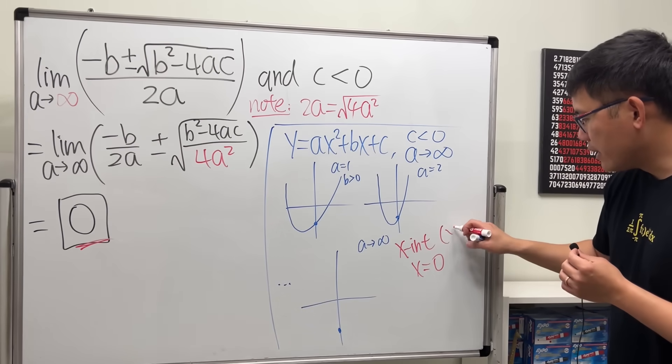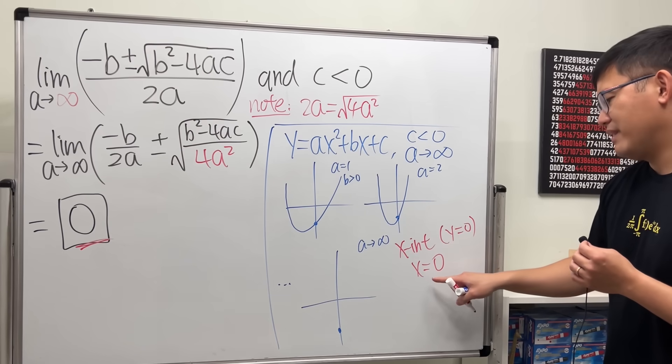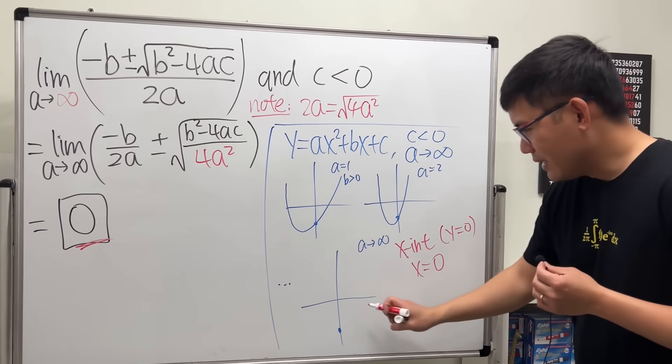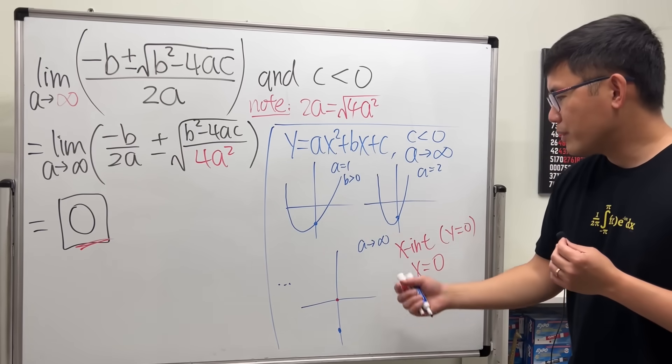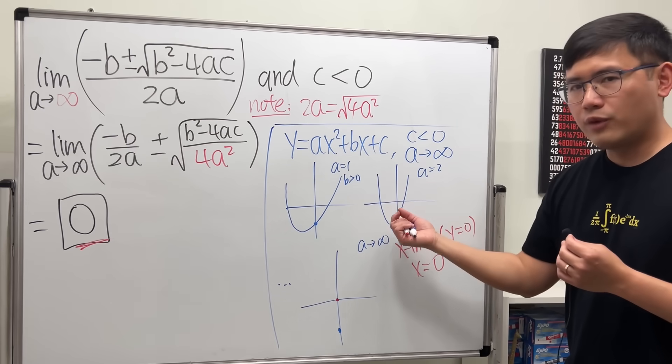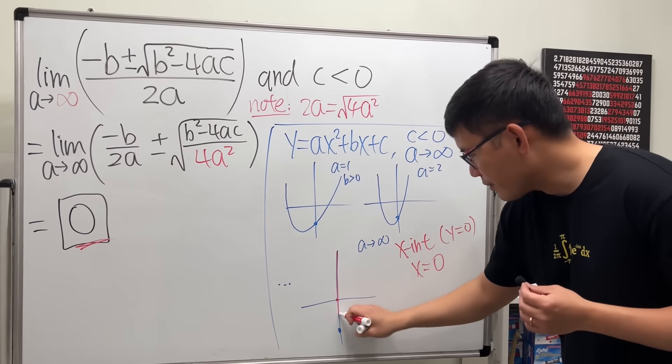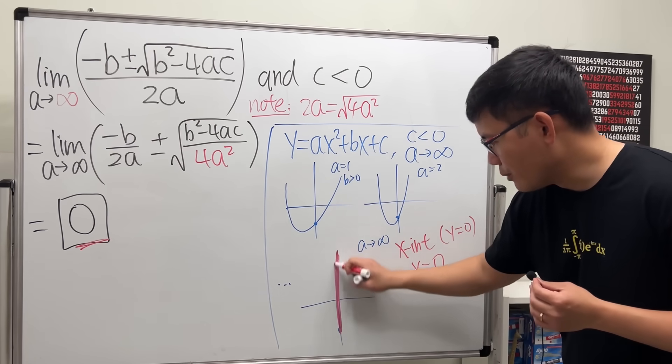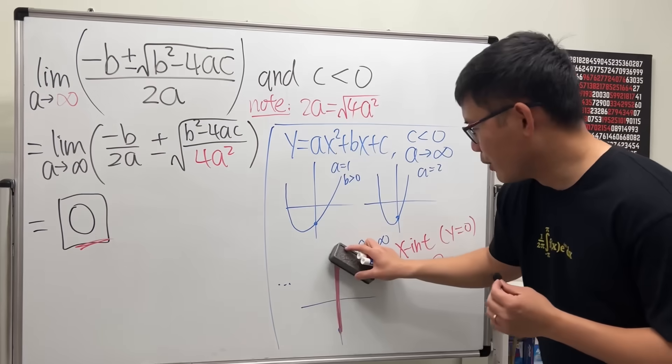x-intercept is when y equals zero, so you just get zero and zero. So guess what? You're going to have it right here. And remember, the bigger a value is, the narrower the graph will be. So what's the graph? You're just going to get a vertical line, almost like a vertical line.